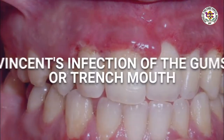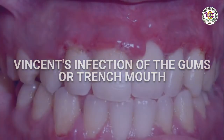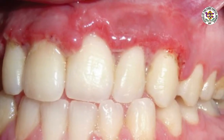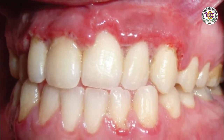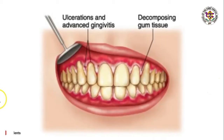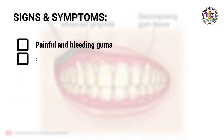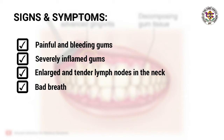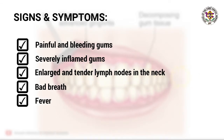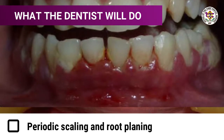Vincent's infection of the gums, also called trench mouth, affects both adults and children. A person with Vincent's infection may not want to eat because their teeth hurt when chewing food, which can worsen malnutrition. Signs and symptoms include painful and bleeding gums, severely inflamed gums, enlarged and tender lymph nodes in the neck, bad breath, and fever.